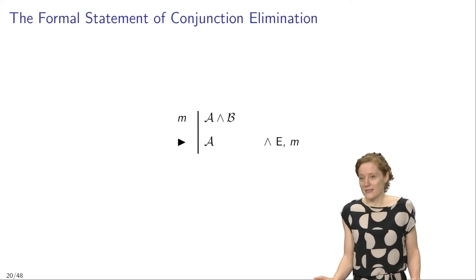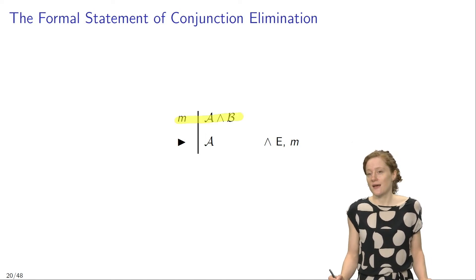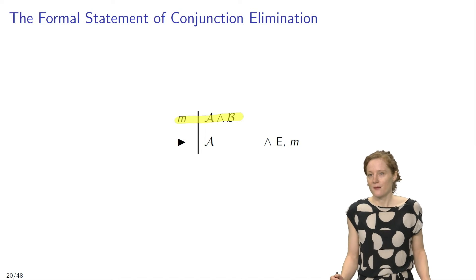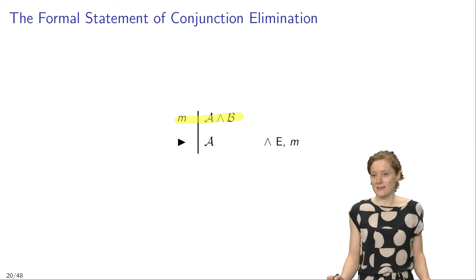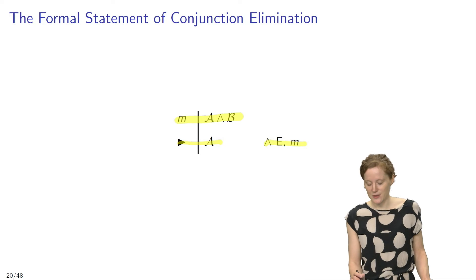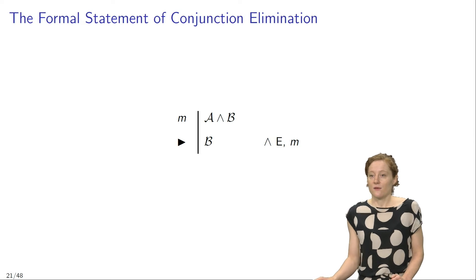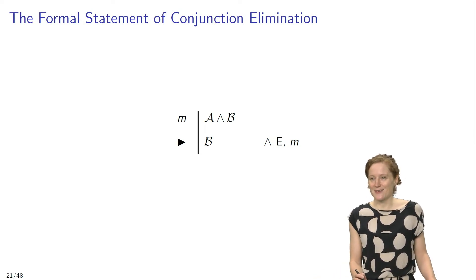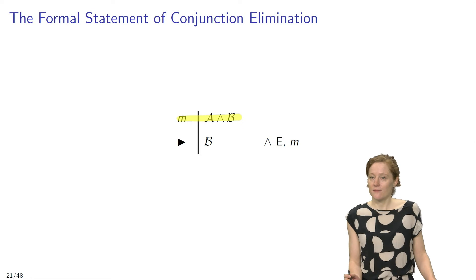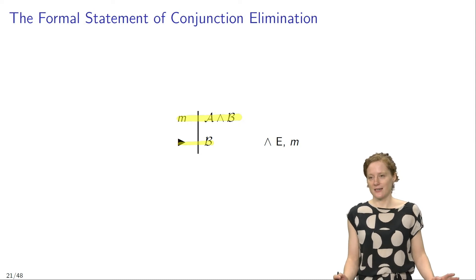Formally, the rule looks like this. Suppose that in line M of your proof you have a conjunction of the form A and B, where the first conjunct is a sentence of the form A and the second conjunct is a sentence of the form B. The rule conjunction elimination then licenses you to infer the first conjunct A, as long as you justify this inference by citing the rule and the line to which you apply it. The rule also licenses you to infer the second conjunct B, and you can justify this inference by citing conjunction elimination.